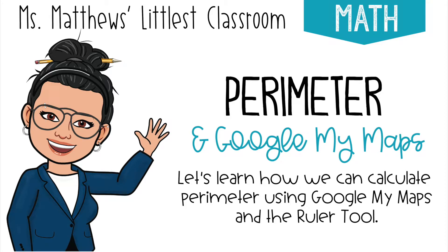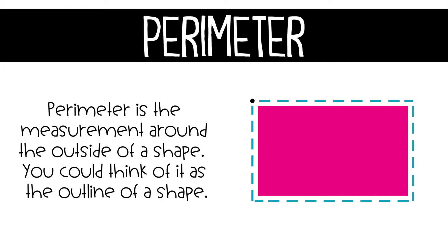Hi and welcome to Ms. Matthews's Littlest Classroom. Today we're going to learn how to use the Ruler tool in Google My Maps to find the perimeter of a polygon. Remember that perimeter is the measurement around the outside of a shape. To calculate the perimeter, we add all the sides together.